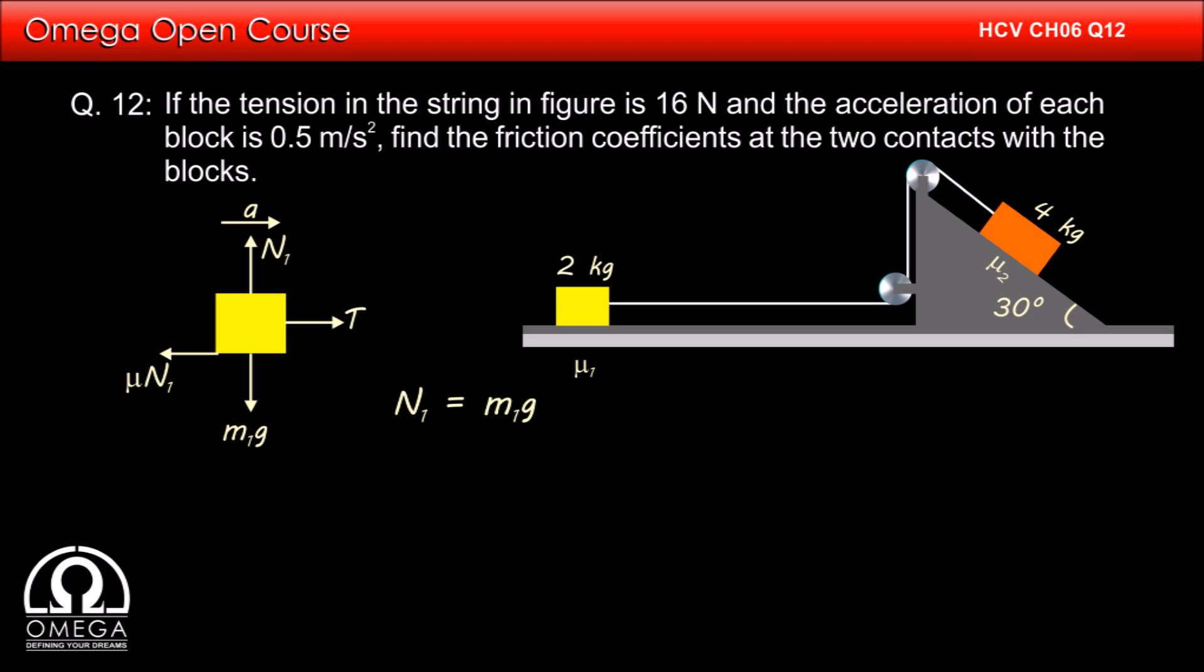Since there is no motion in vertical direction, normal must be equal to the gravitational force, i.e. N₁ is equal to M₁g. Since value of M₁ is 2 kg, the normal force is 20 newtons.